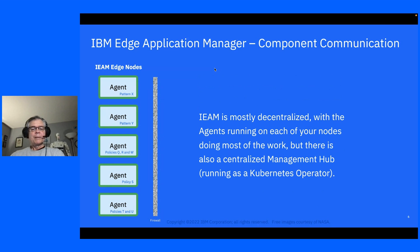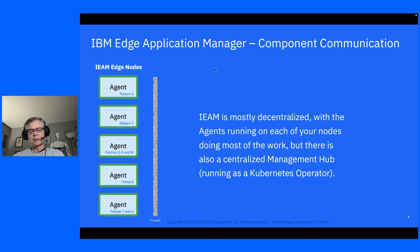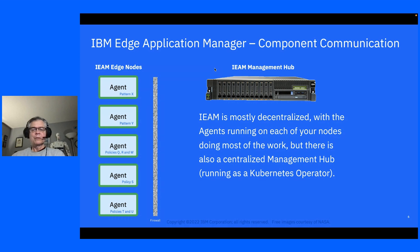IEAM is mostly decentralized with the agents running on each of your nodes doing most of the work, but there's also a centralized management hub running in an OpenShift Kubernetes cluster as an operator. It can be in your factory, your corporate data center, and it can even be air-gapped from the internet. It just needs to be contactable by your agents.